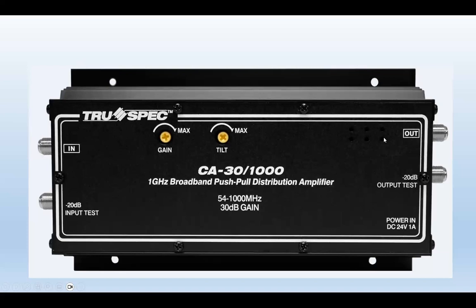As a recap: here's the input and the output on the amplifier, here's the gain or volume control. Here is the minus 20 dB test output — because this signal is very strong. If you plug it directly into a TV it won't look good because the signal is too strong, like overdone contrast. The minus 20 dB test output acts like a probe — you can plug that coaxial cable into a TV set to test the input. Same on the output side: there's a test port that takes minus 20 dB so you can measure the output at a reasonable signal level.